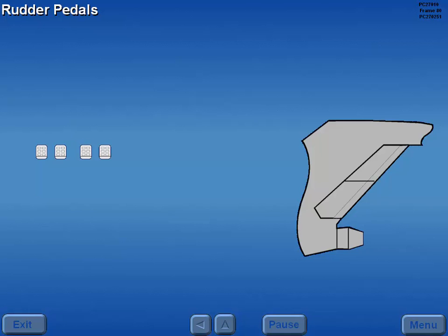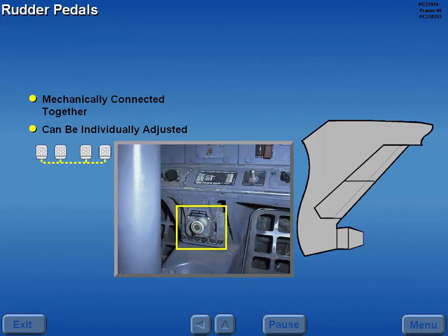The rudders are controlled by the captain's and first officer's rudder pedals. The rudder pedals are mechanically connected together. Each set can be individually adjusted using a hand crank.